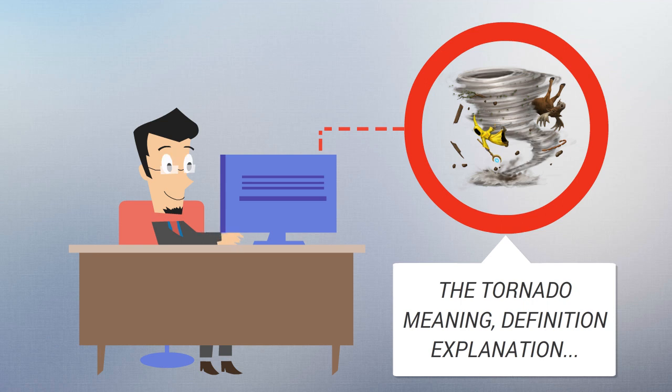Water spouts are characterized by a spiraling funnel-shaped wind current, connecting to a large cumulus or cumulonimbus cloud.